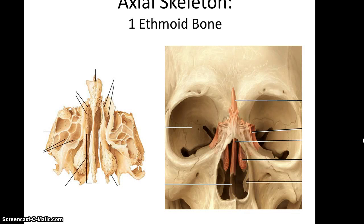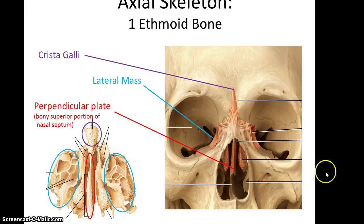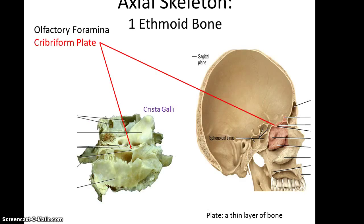Now we move on to the ethmoid bone, which is slightly anterior to the sphenoid bone — it's a rather odd-shaped little bone. It has the crista galli, which sort of sticks up. On the sides, forming part of the orbits, is the lateral mass. It also has the perpendicular plate sticking down into the nasal cavity that forms part of the nasal septum. Looking at the side view, you see the ethmoid bone has the cribriform plate, which forms part of the roof of the orbital cavity or the floor of the anterior fossa. Within that cribriform plate are lots of tiny little holes referred to as the olfactory foramina, where the olfactory nerves will pass through.